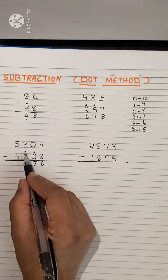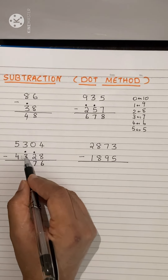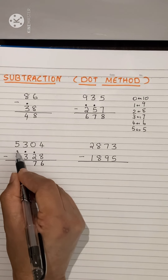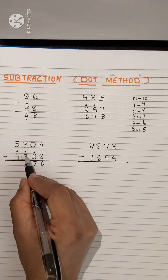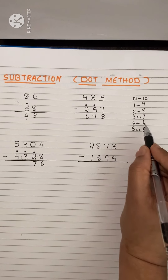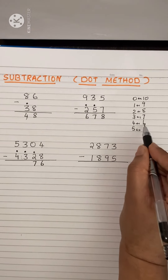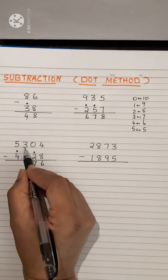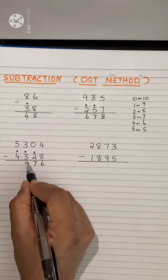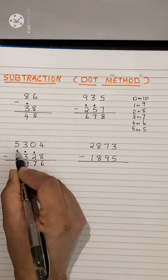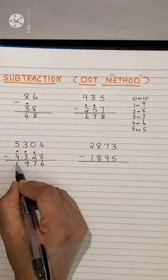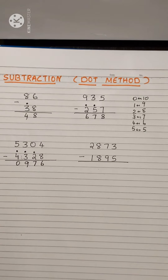Now this is 4. Here 3 plus 1 is 4. And 3 and 4 — not possible. So put a dot over here. Check 4 — which number is related to 4? It is 6. So add 6 plus 3: 6 plus 3 is 9. Here 4 plus 1 is 5, and 5 minus 5 is 0.